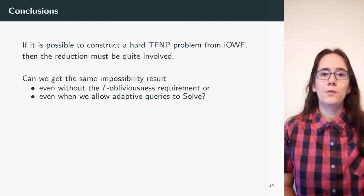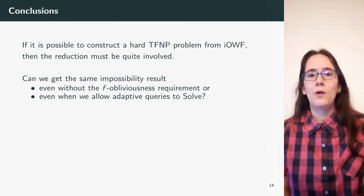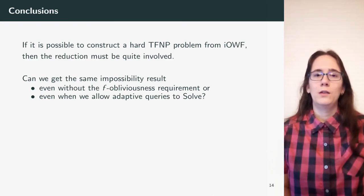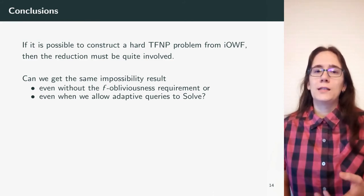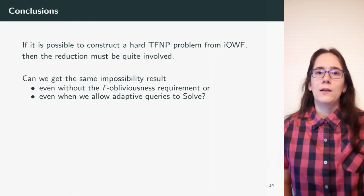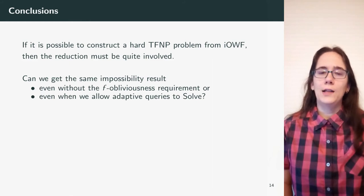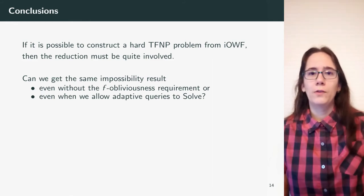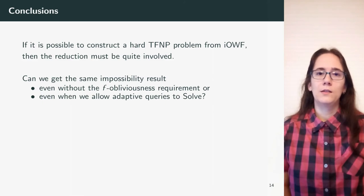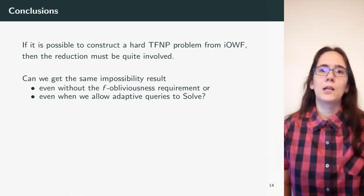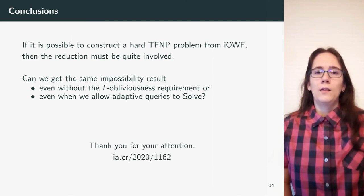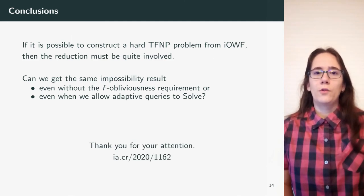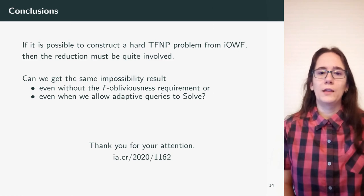The second open question is whether we can allow adaptive queries to solve. Note that here the set of protected values is dependent on the answers received from solve for different instances, so we get a circular dependency. This is all from me — thank you for your attention. You can find our paper on ePrint; our ePrint number is 2020/1162.